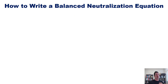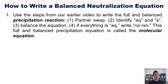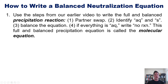So how do you write a balanced neutralization or acid-base equation? We follow the same steps used for net ionic equations discussed in an earlier video linked in the description. We begin by writing out a full balanced molecular equation, which involves doing a partner swap, identifying what things are soluble or insoluble — AQ or S — then balancing the equation. If everything is AQ, we write no reaction. This full balanced equation is called the molecular equation.